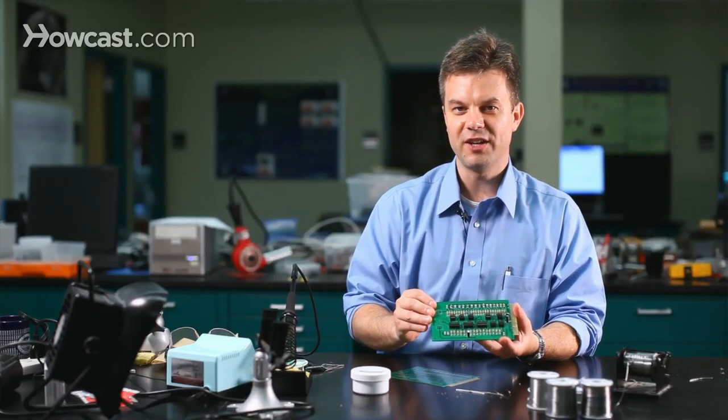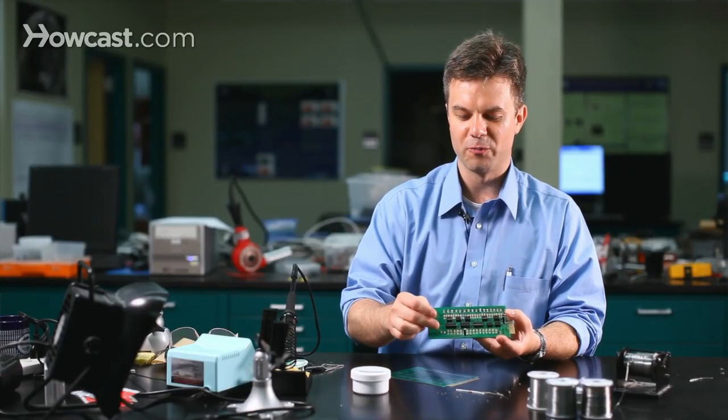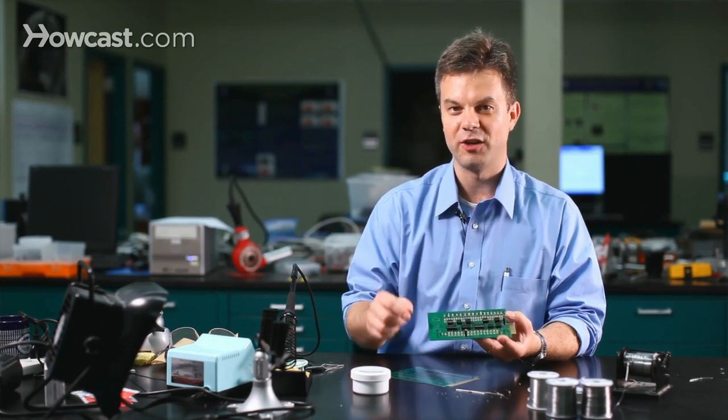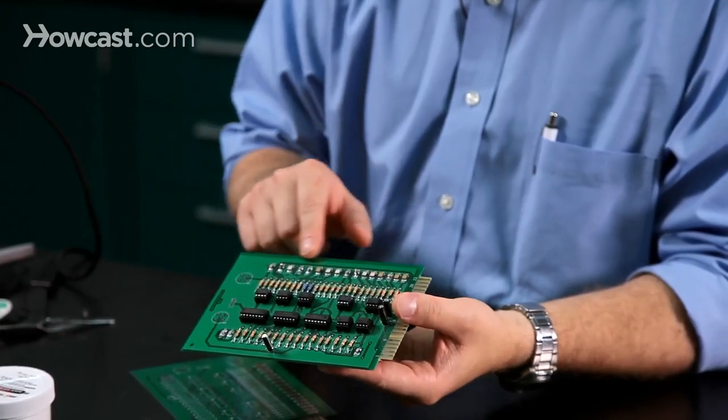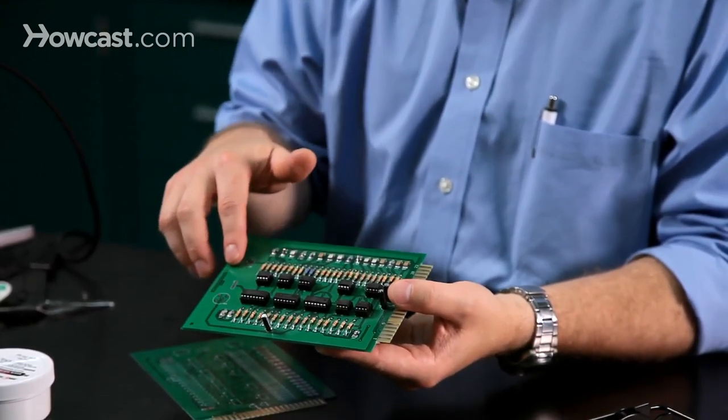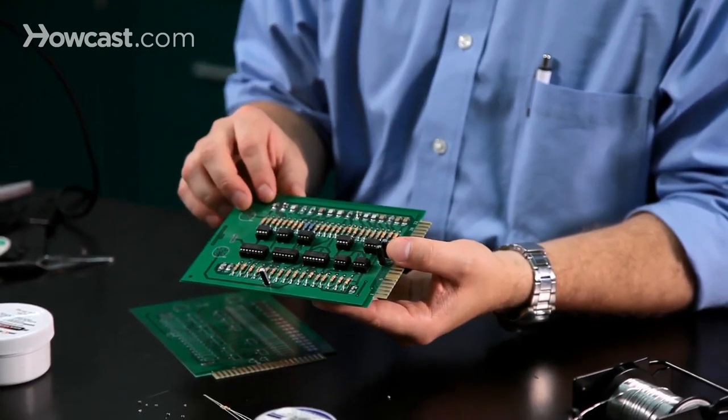Now, this green layer is necessary to prevent the solder from crossing over and shorting out traces that should not be connected. Just beneath that layer is a layer of copper, and that provides one layer of conductors which connect the circuit electrically.